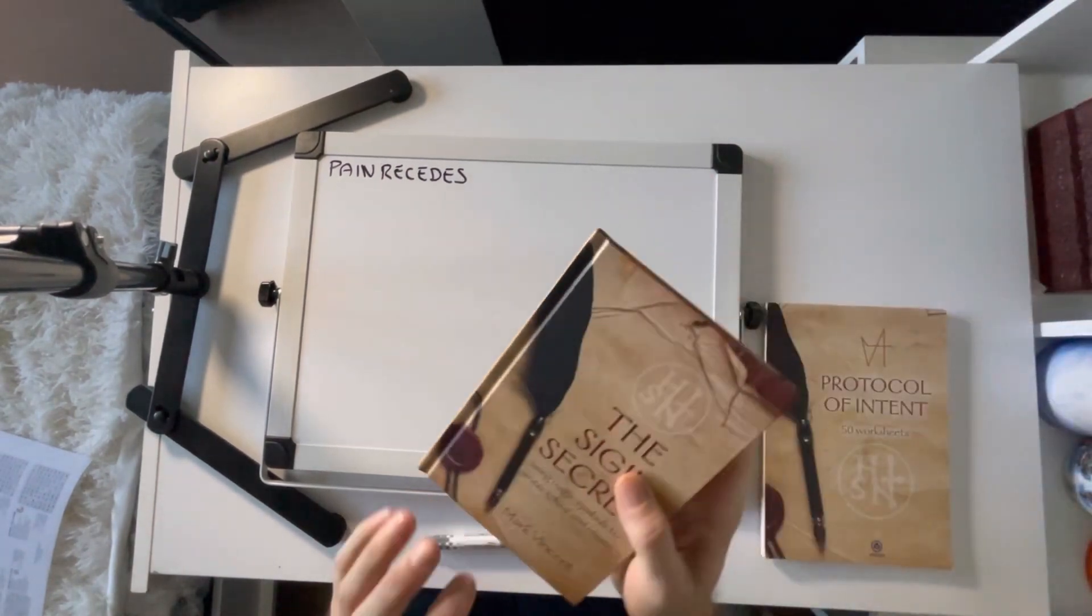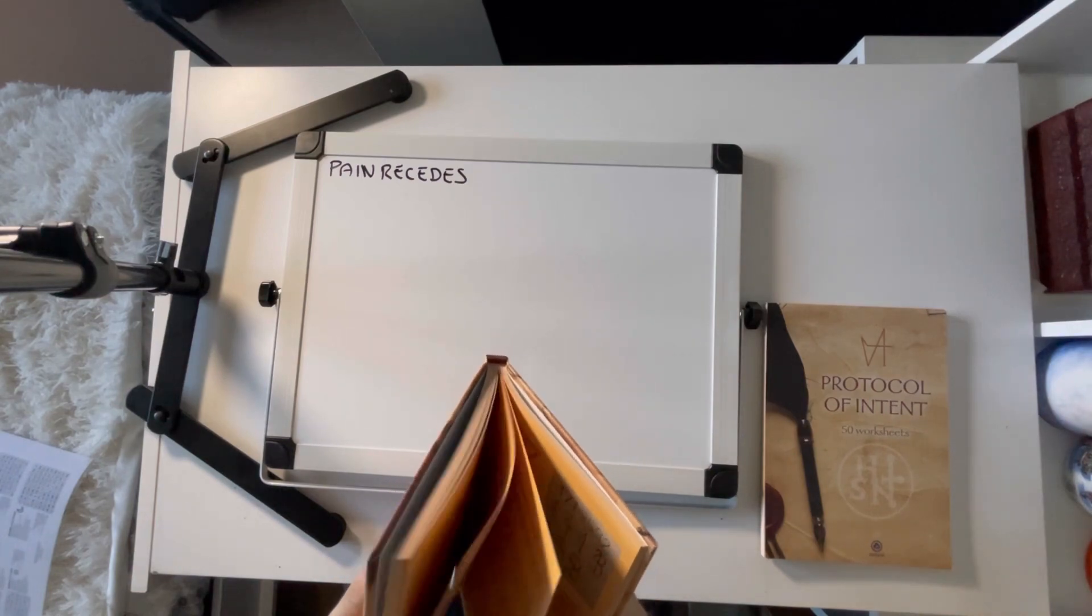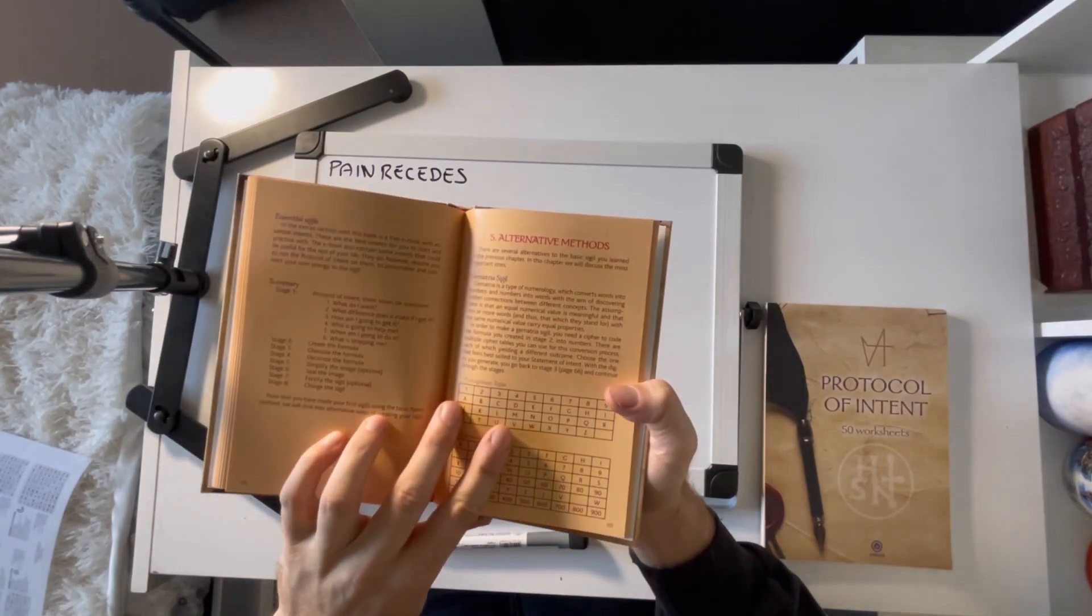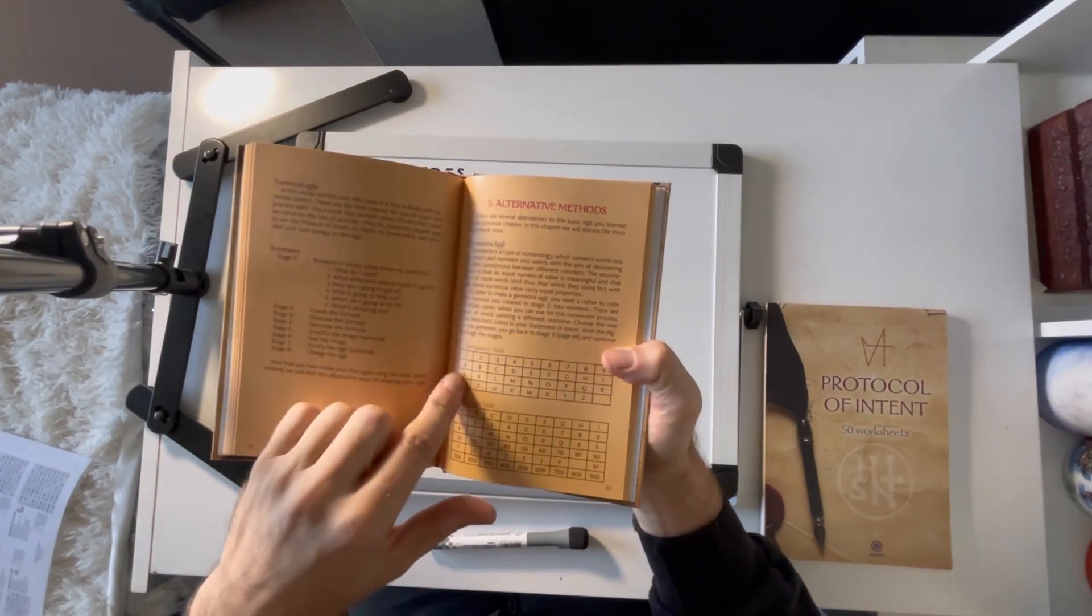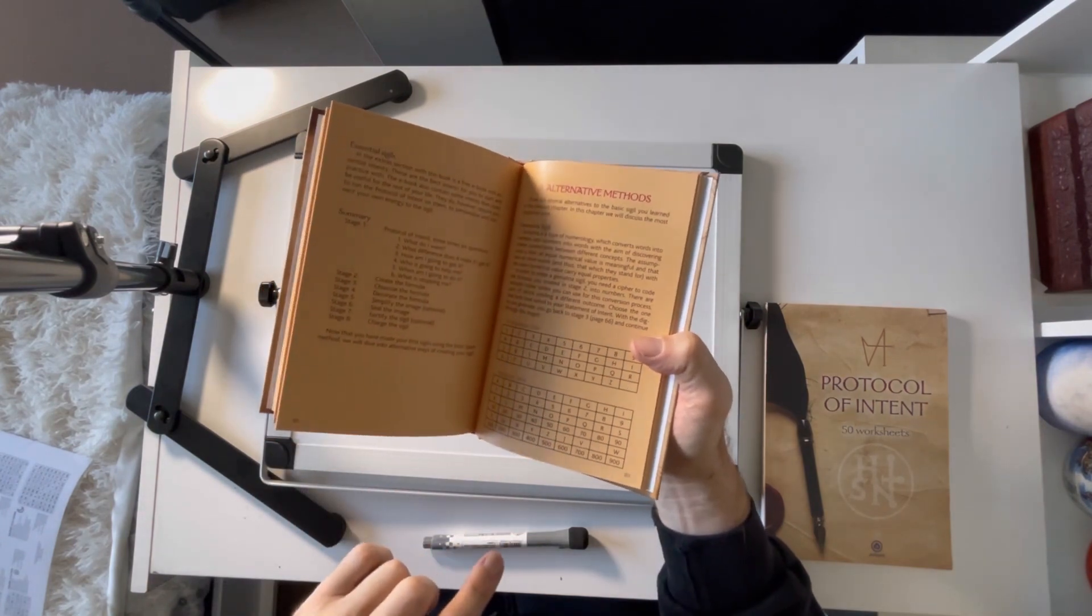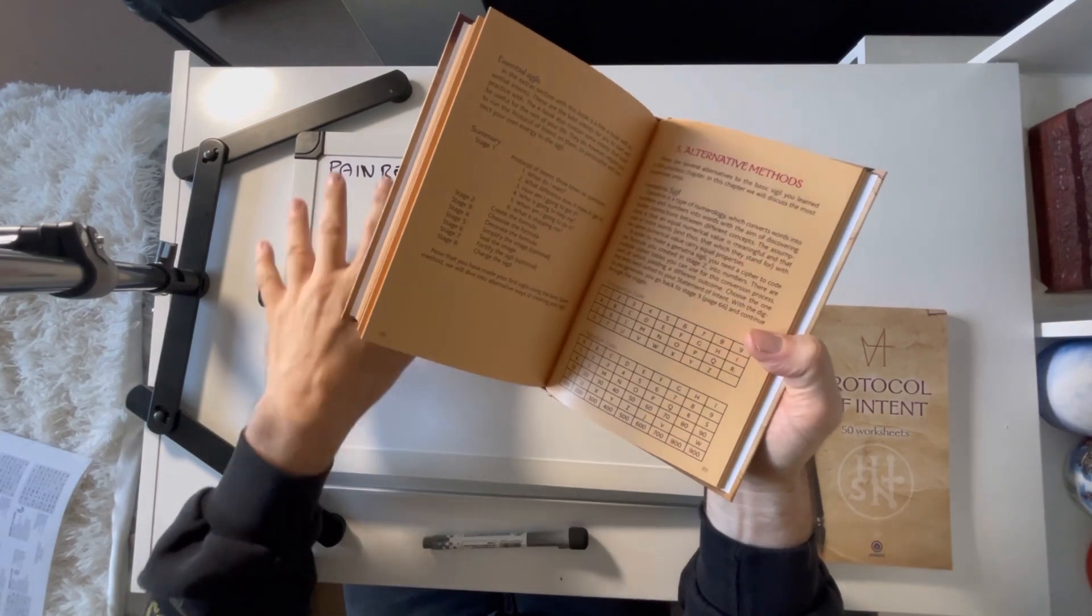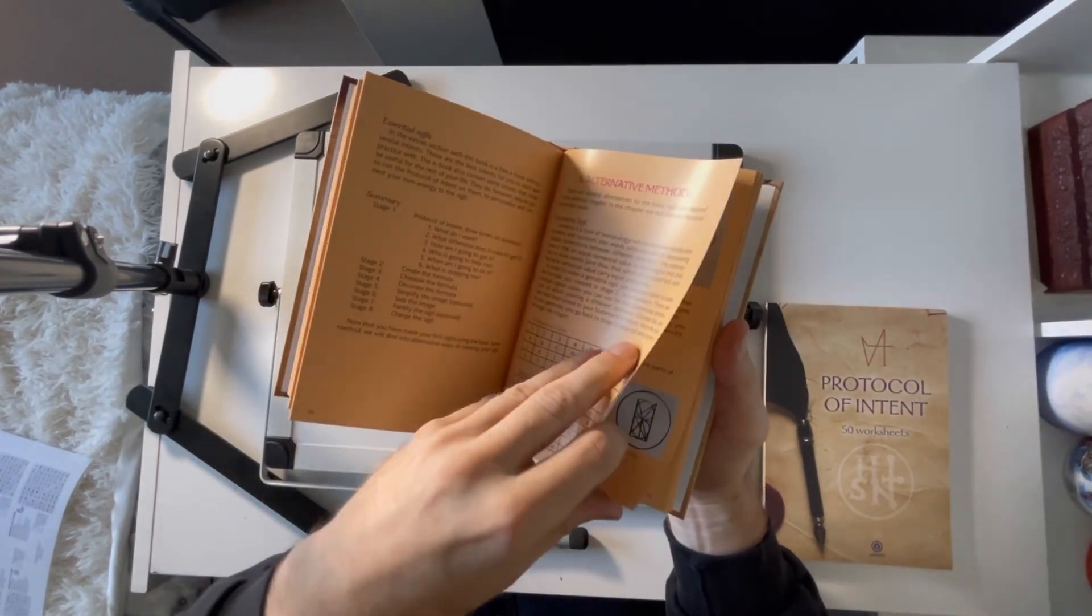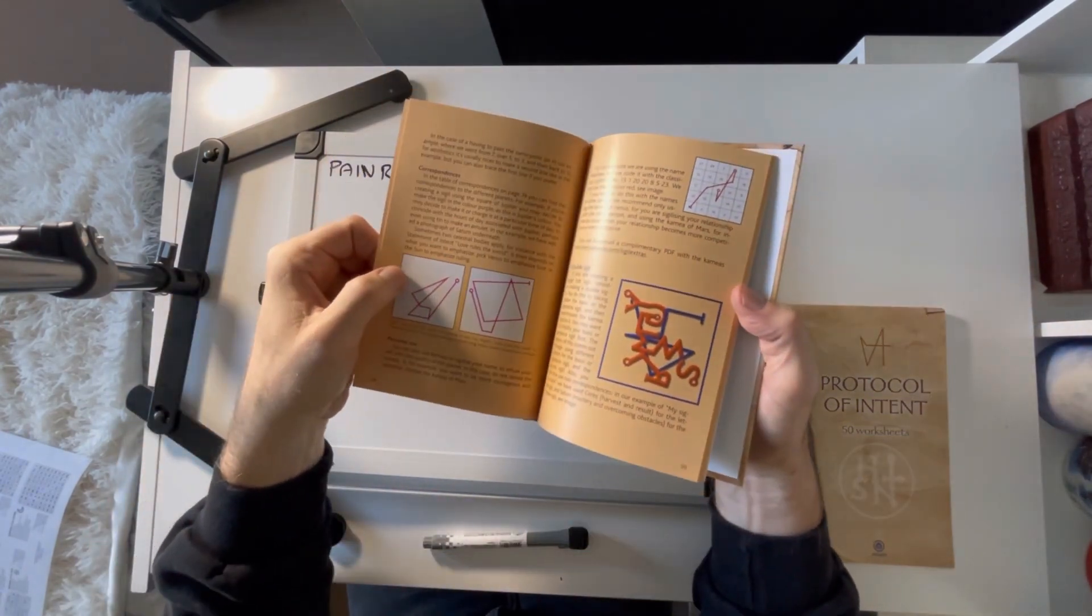As I mentioned in other videos, on page 89 of my book under the heading alternative methods, we're going to use this Pythagorean table to convert letters into numbers and make a planetary sigil.